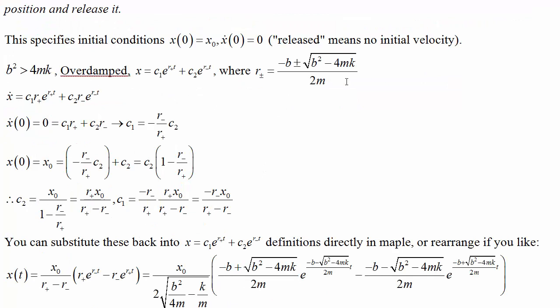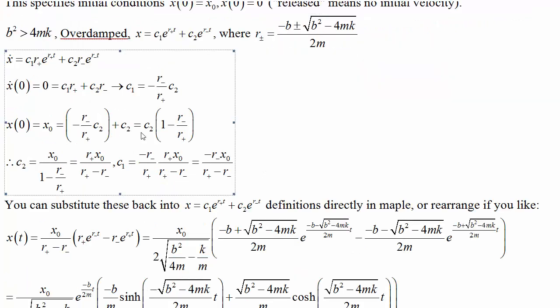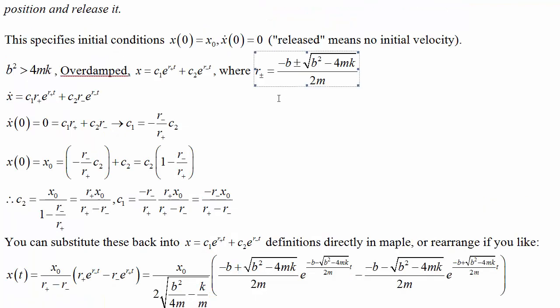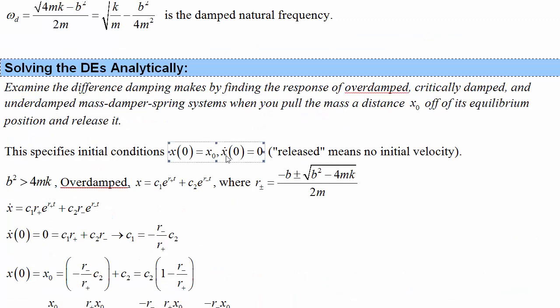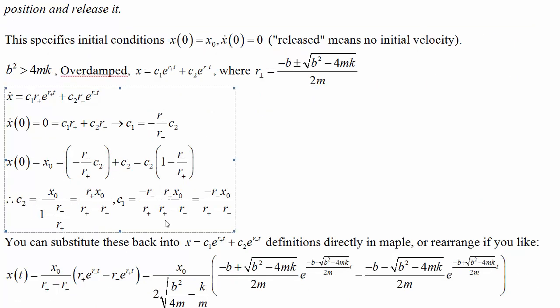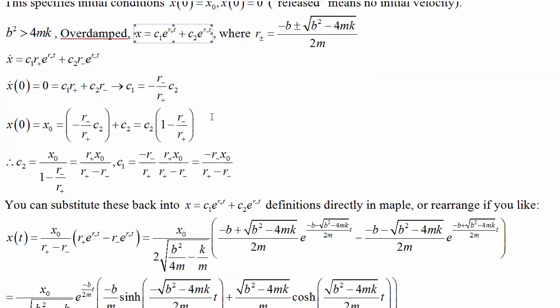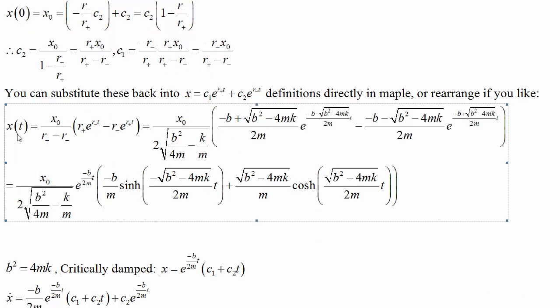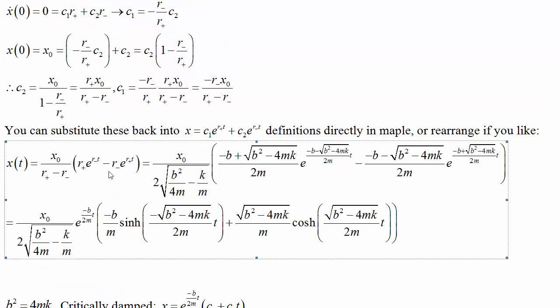Substituting in the overdamped case, we can come up with what the roots are. If we take the roots we found last time and substitute those into the differential equation for this set of initial conditions now, then we can solve for the constants. And when we substitute back, we can find the equation of motion.